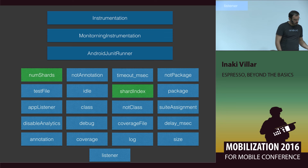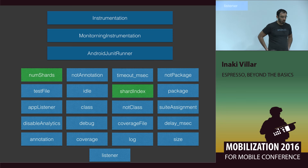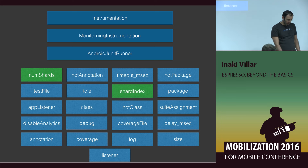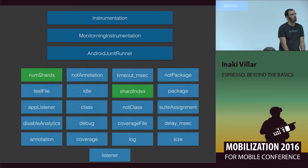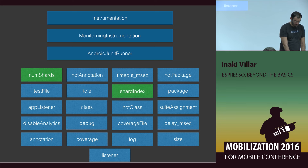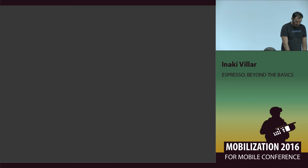That's pretty much the story with AndroidJUnitRunner. We are using all this unit runner because previously the Google instrumentation runner — the test instrumentation runner — is now completely deprecated. Think about these runners.